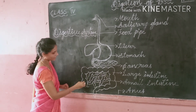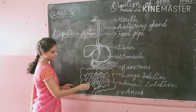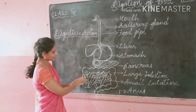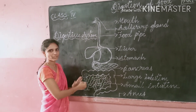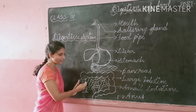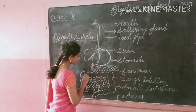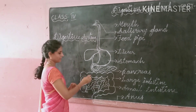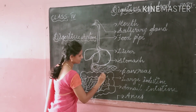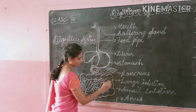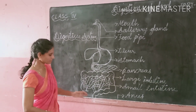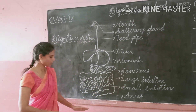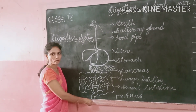The undigested food enters into the large intestine. In the large intestine, the walls absorb the extra water, and the liquid-like food becomes semi-solid. This undigested food and waste material will go out through the anus when you go to the toilet.